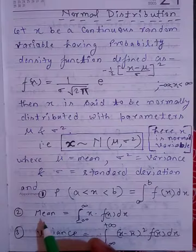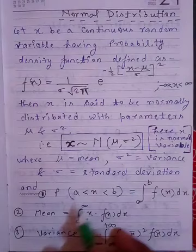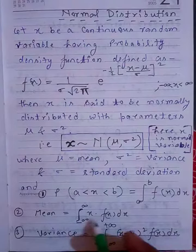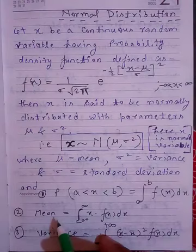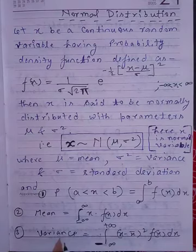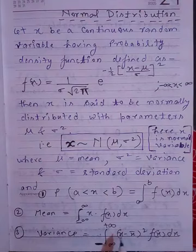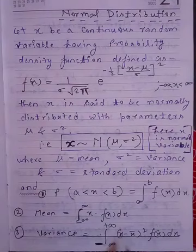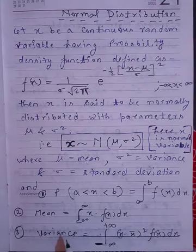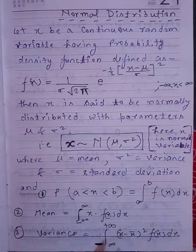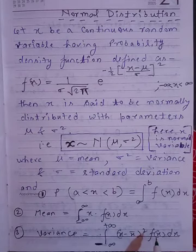Similarly, for a continuous random variable, the mean formula is: integrate x times f(x) within the limits minus infinity to plus infinity — this gives the mean. For variance, integrate (x minus x-bar) squared times f(x) within the limits minus infinity to plus infinity — this gives the variance of continuous random variable x, where f(x) is the known PDF and x-bar is the mean.